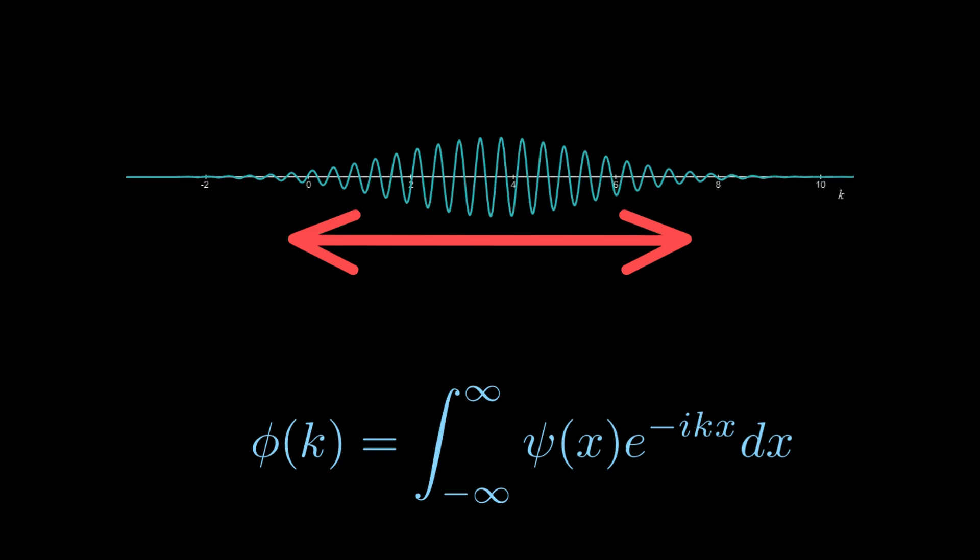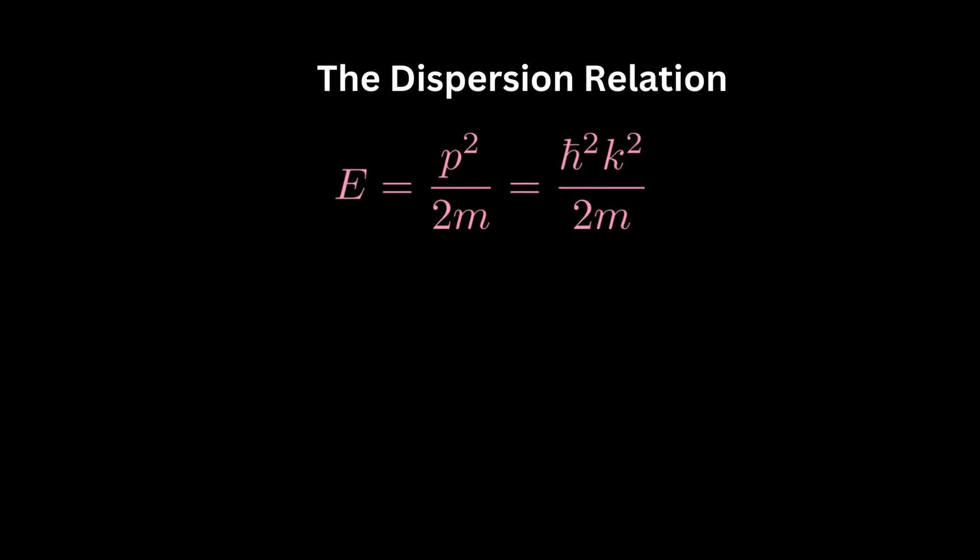The relation between energy and momentum, or frequency and k, is called the dispersion relation. For a free particle, the energy is its kinetic energy, where p equals h bar times k. Notice how the frequency is not linear with k. The group velocity of a wave packet is given by, so we differentiate the dispersion relation and get.